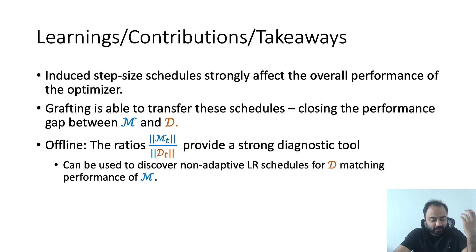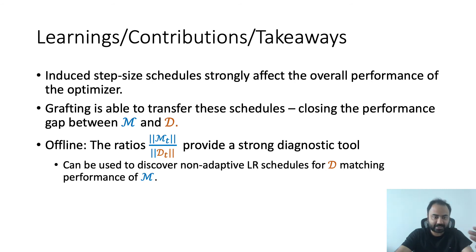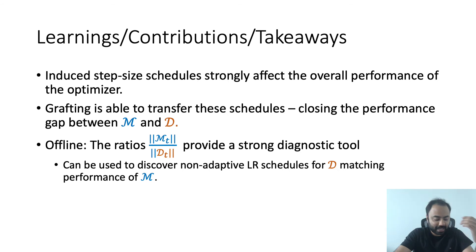As I defined it, grafting is an adaptive way to transfer the learning rate schedule, requiring both algorithms to run in parallel. But we discover that just analyzing the induced step schedule — given by the time series of ratios of the norms of the M step and the D step — post facto is also a very useful diagnostic tool. This can often lead to the discovery of a simple non-adaptive learning rate schedule or scaling for D which can match M's performance.